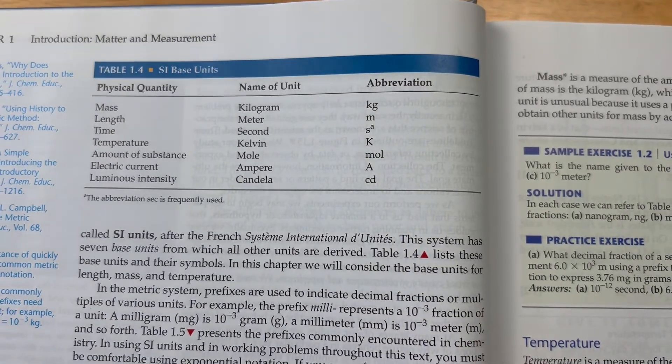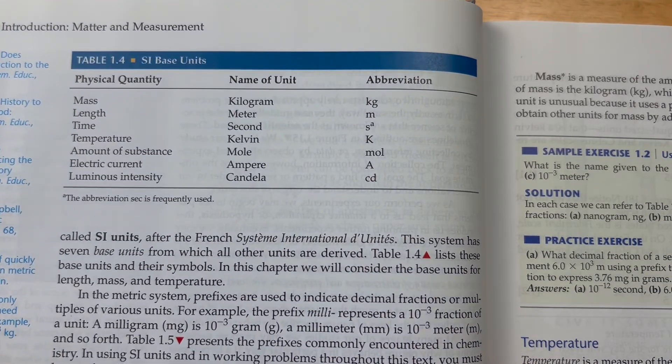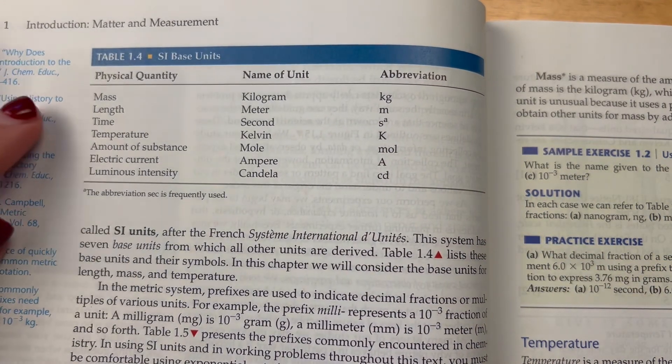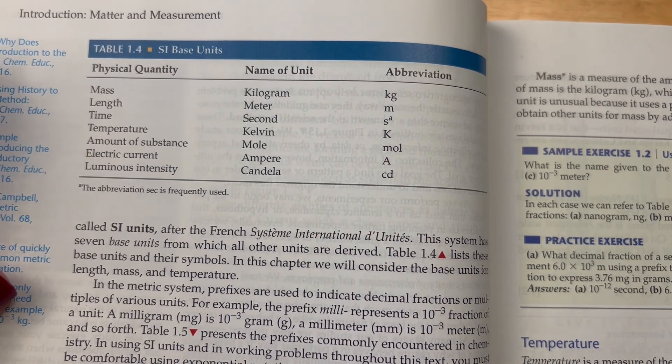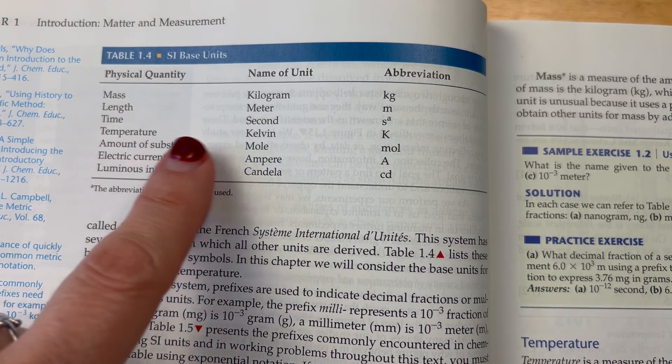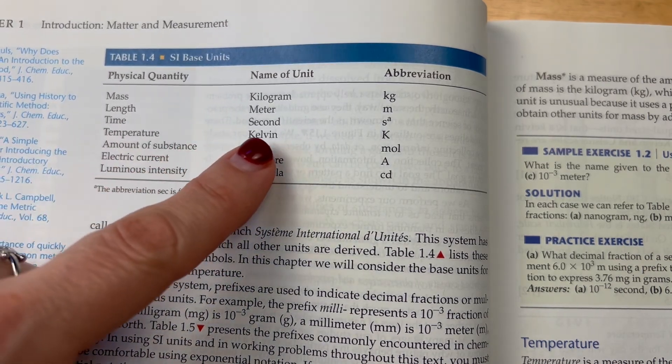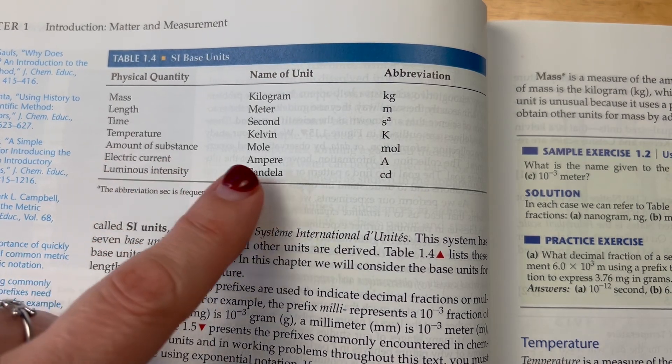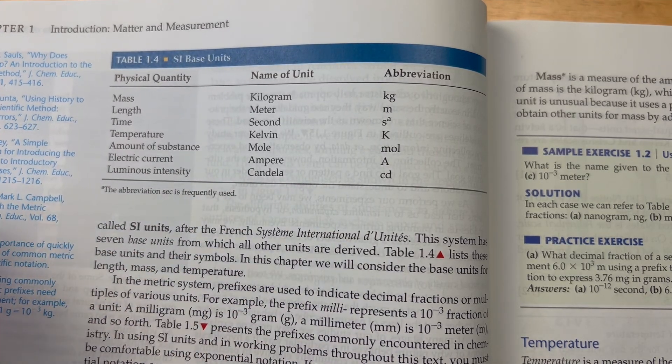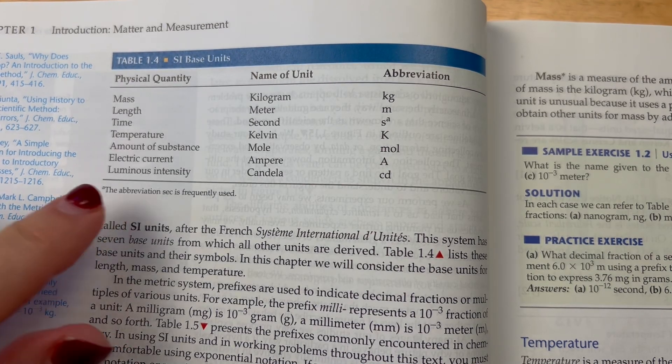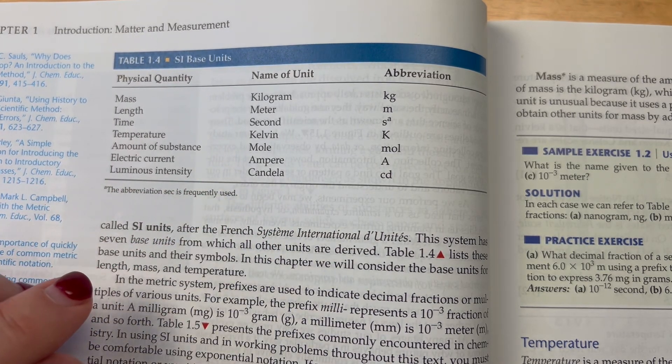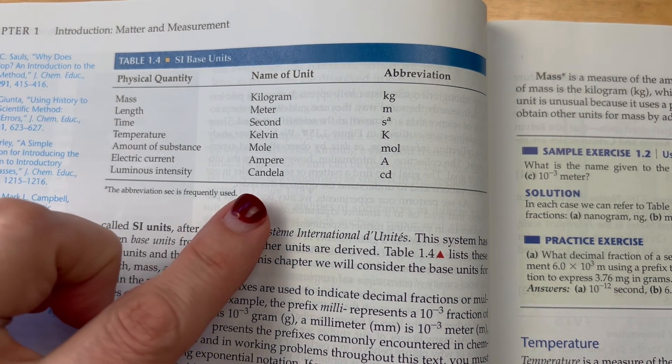And so this is where we're looking at the base units that are used. This would be not just for chemistry, also for physics and other sciences. For mass, we use kilogram. Length, meter. Time, second. Temperature, kelvin. The amount of a substance is a mole. Electric current, which we don't use a lot in chemistry but we do when we talk about electrochemistry, is the ampere. Luminous intensity, very rarely do we use that in chemistry, but there it is, the candela.